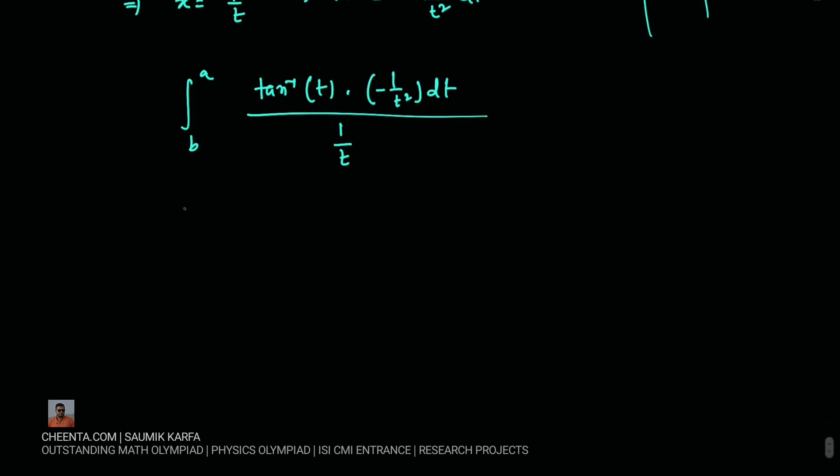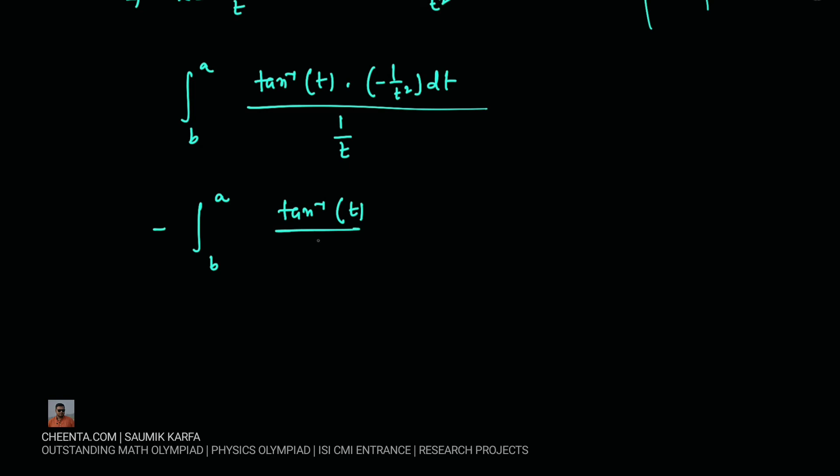Now if we do a little bit of simplification we will get minus b to a tan inverse of t over t dt because this t and t square will cancel one of the t's and this t will come in the denominator.